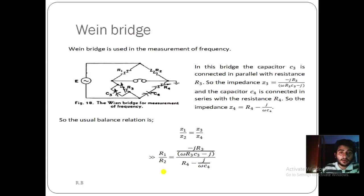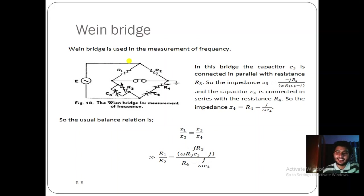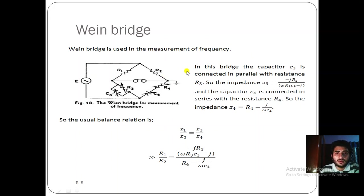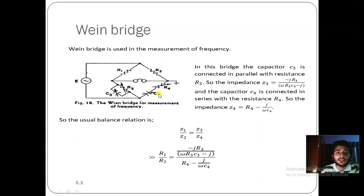The Wien bridge is another type of alternating current bridge, used for the measurement of frequency. A memory tip: Wien starts with 'W', which looks like omega (ω), and omega is related to frequency. In the Wien bridge circuit, there is a constant voltage source. In place of Z1 there is only R1, Z2 has only R2, Z3 has R3 and C3 connected in parallel (both variable), and Z4 has capacitance C4 and R4 connected in series.